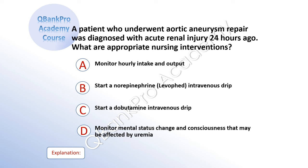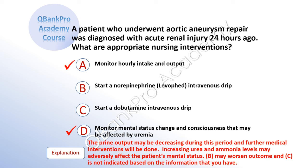A patient who underwent aortic aneurysm repair was diagnosed with acute renal injury 24 hours ago. What are appropriate nursing interventions? A: monitor hourly intake and output. B: start a norepinephrine intravenous drip. C: start a dobutamine intravenous drip. D: monitor mental status change and consciousness that may be affected by uremia. The correct answer is A: monitor hourly intake and output. And D: monitor mental status change and consciousness that may be affected by uremia. Explanation: The urine output may be decreasing during this period and further medical interventions will be done. Increasing urea and ammonia levels may adversely affect the patient's mental status. B may worsen outcome and C is not indicated based on the information given.